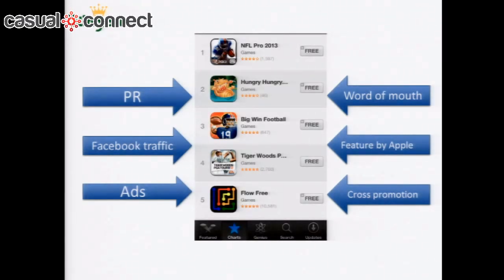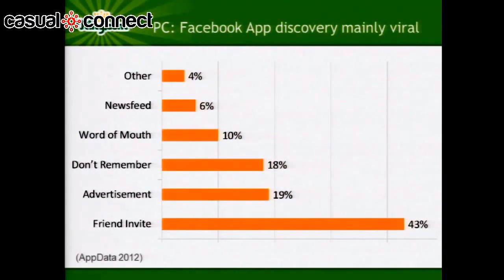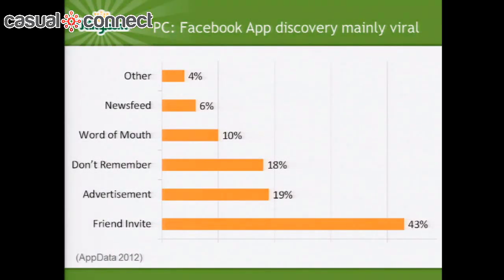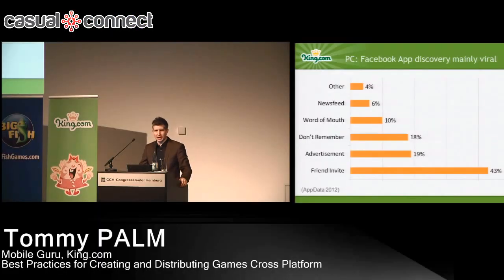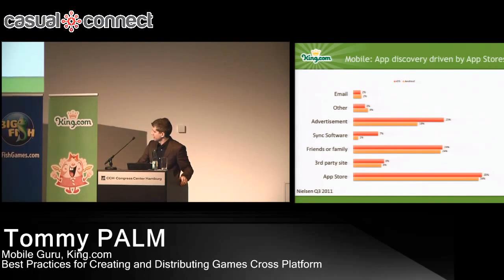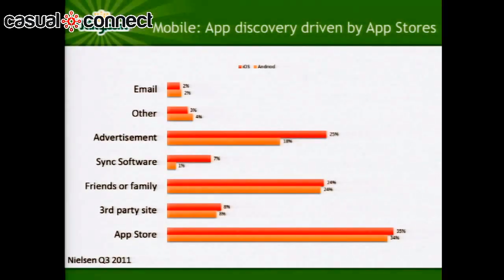I'll be talking specifically about Facebook, as that comes pretty naturally to King. If you look at this chart of PC Facebook app discovery, you can see that it's mainly viral — 43% discover games by friend invites. That means for paid advertising, you get about half a player for free, which is great. If you look at mobile app discovery, it's much more driven by the app stores, which is much harder to control. You can't buy visibility on the app stores.